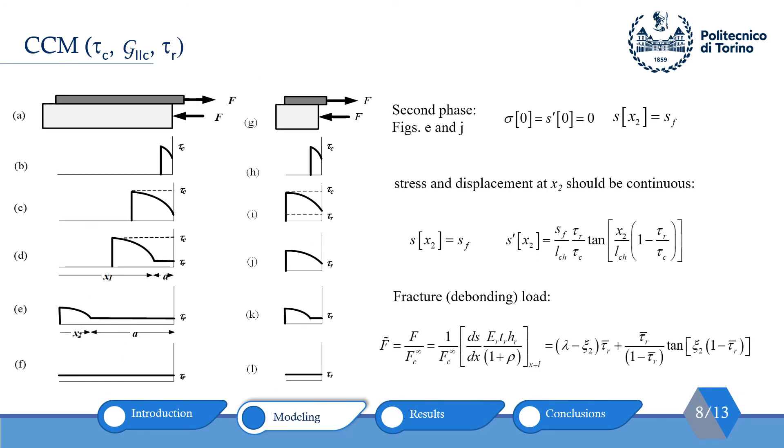In the second phase, which can be seen in point E, some points are in softening and others are debonded. So, boundary conditions would be traction-free at x equal to 0 and relative displacement at x equal to x2 would be sf. Then, we should satisfy continuity conditions for stress and displacement at x equal to x2 for both debonded and softening part. Finally, fracture load can be calculated using relative displacement at the end side using this expression.